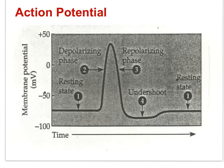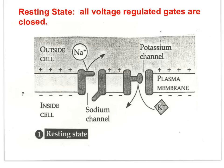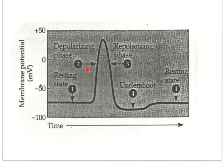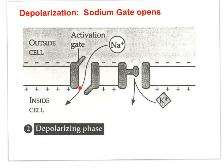Let me review the relationship between the action potential tracing on an oscilloscope and the voltage-regulated membrane proteins. I will explain the images according to numbered phases on the tracing. Number one: resting potential, negative 70 millivolts, prior to the arrival of a stimulus. All voltage-regulated gates are closed. The polarized condition of the membrane is maintained by the sodium-potassium pump. Number two: a stimulus causes the membrane potential to exceed threshold, initiating an action potential — rapid depolarization. Voltage-regulated sodium gates open, allowing sodium to diffuse into the cytoplasm.